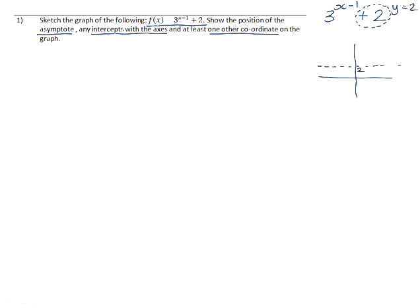If we take a look at the coefficient of the exponential part of this equation, it has a coefficient of positive 1. That means that it's going to lie above the asymptote. If it had a negative coefficient, it would lie below the asymptote.